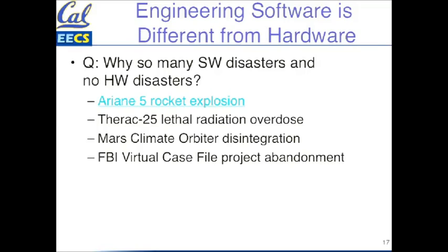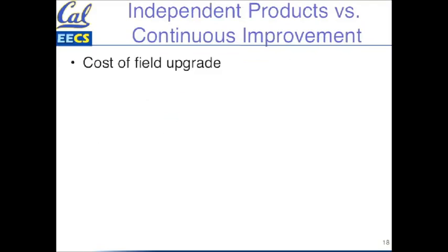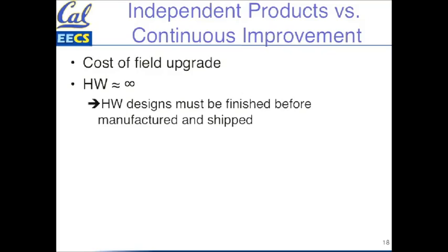We think it has to do with basically the fundamental nature of the media itself. There are different cultures around hardware and software, and we think it has to do with the cost of the field upgrade. If there's a flaw in the Intel microprocessor and you have to upgrade all 300 million PCs, that would cost infinite money — you just can't do that. So hardware really has to work when you ship it. That's the culture around hardware.